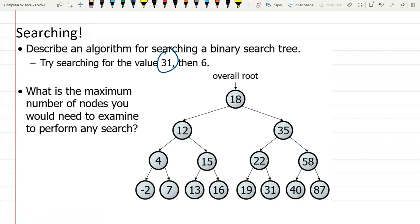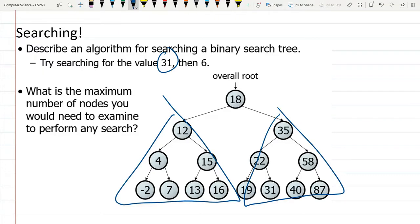But we don't have to look at both subtrees this time. Let's think about it. Which of these two subtrees should we look in? I'm looking for 31, and I found 18. Where should I look?